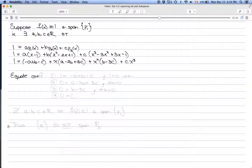When we do that, we get four equations: (1) 1 = -a + b - c, (2) 0 = a - 2b + 3c, (3) 0 = b - 3c, and (4) 0 = c.